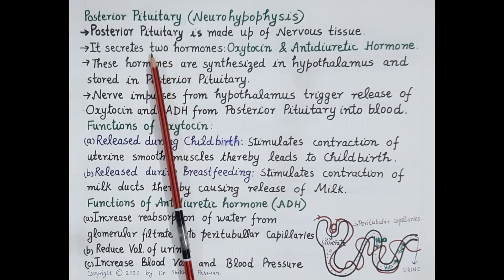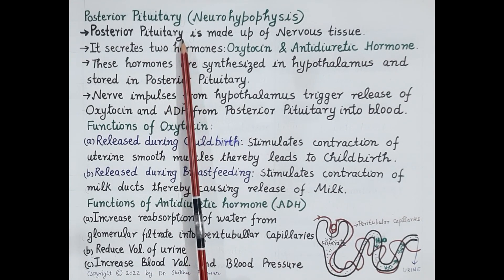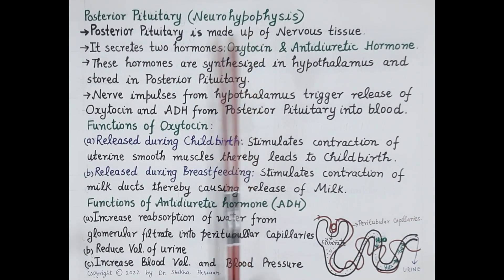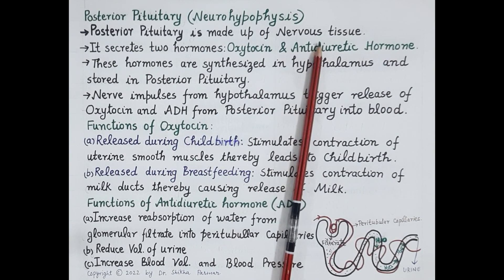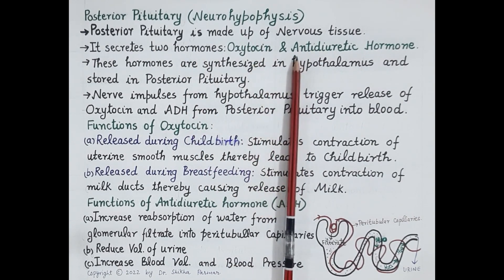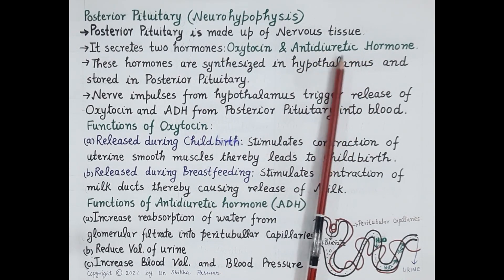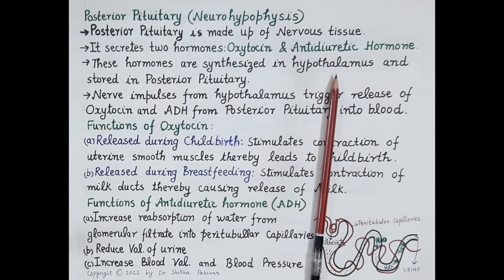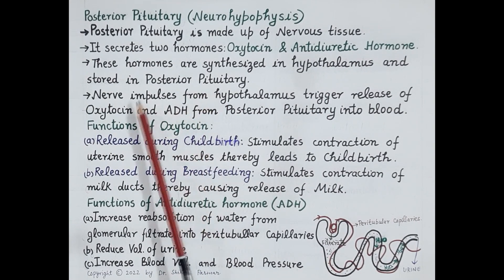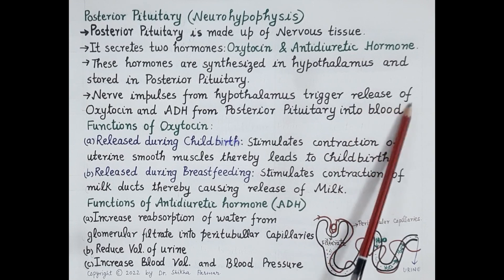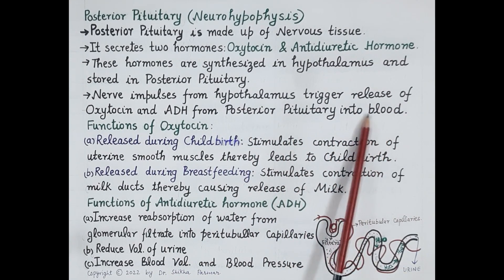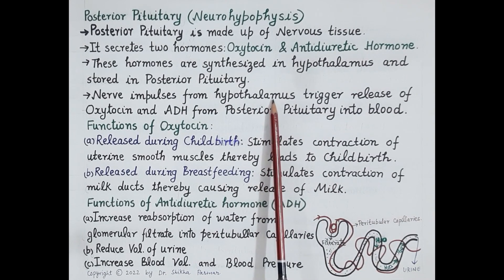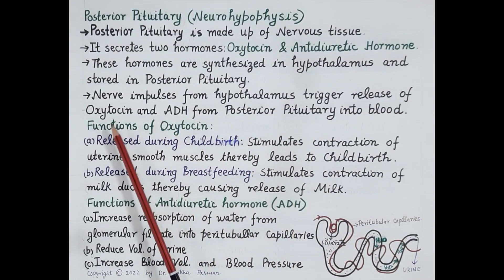Let us summarize important features of posterior pituitary. Posterior pituitary is also called as neurohypophysis. Since posterior pituitary is an extension of hypothalamus, it is made up of nervous tissue. Posterior pituitary secretes two hormones: oxytocin and antidiuretic hormone (ADH). These hormones are synthesized in the hypothalamus but stored in the posterior pituitary. Nerve impulses from hypothalamus trigger release of oxytocin and ADH from posterior pituitary into the blood — that is, the signal comes from hypothalamus and posterior pituitary releases these hormones into the blood.